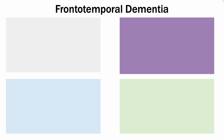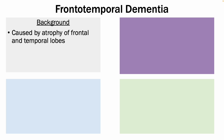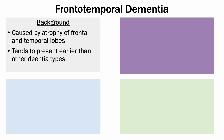The last type of dementia I would like to discuss is frontotemporal dementia, also called Pick's disease. It is caused by atrophy of the frontal and temporal lobes, and it tends to present earlier than other types of dementia. In terms of the clinical presentation, you have a prodromal phase where the patient's personality might slightly change and they stop caring about themselves a little bit.